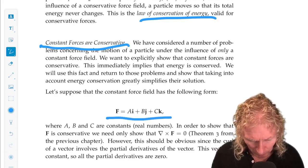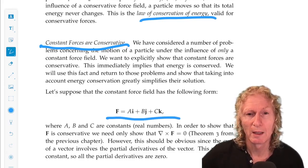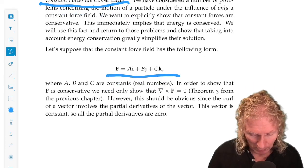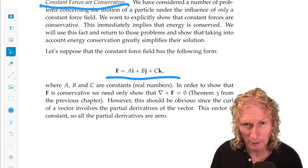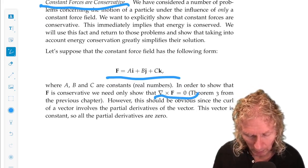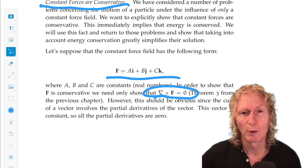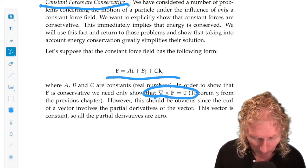So I want to now show that constant forces are conservative. Let's consider a general force in three dimensions: AI plus BJ plus CK, where A, B, and C are constants. You can easily verify that's conservative in the usual way of just computing the curl of the vector field. Clearly the curl involves partial derivatives and these are all constants, so that's all going to vanish.